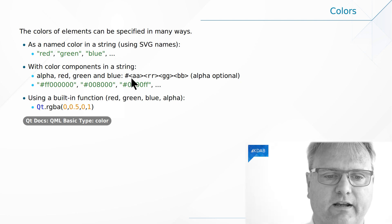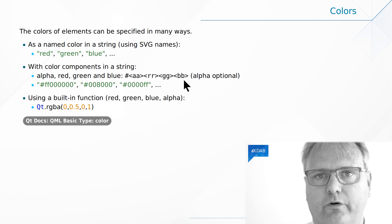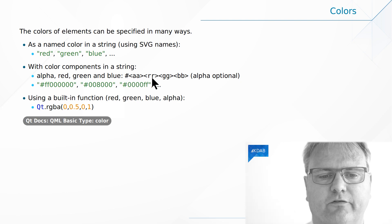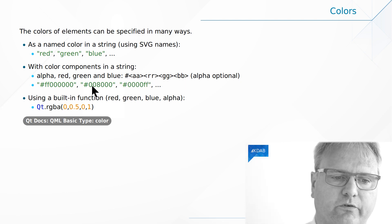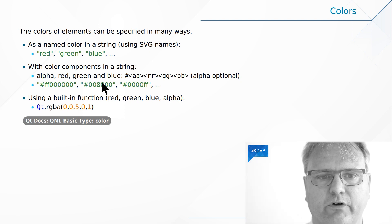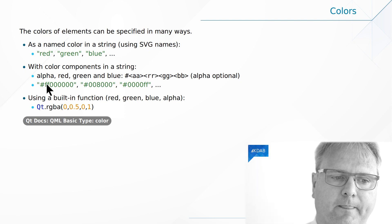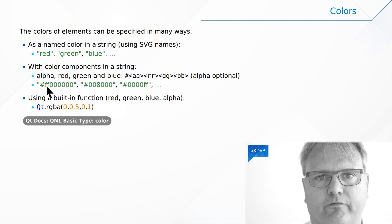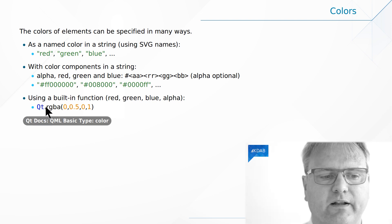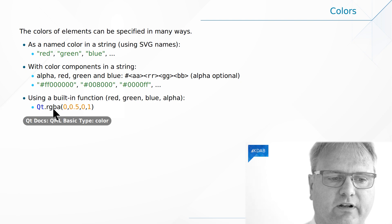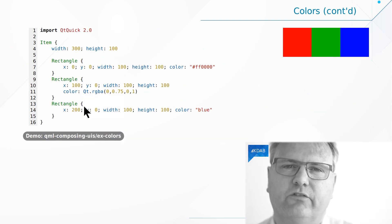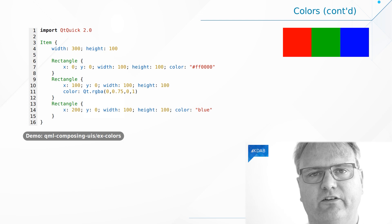Or you can use a hash mark followed by six to eight hex digits — hash mark, then alpha alpha, rr, gg, bb. For example, #008000 means no red, 80 green, and 00 blue. FF in the alpha channel means fully opaque. Or you can use Qt.rgba(), a global element in QML, where you specify the color components directly. It's really not that complex — now you just know the different ways you can do it.